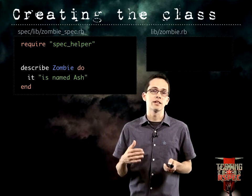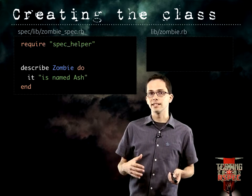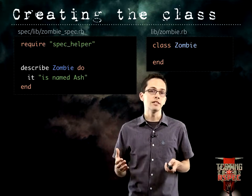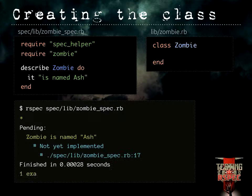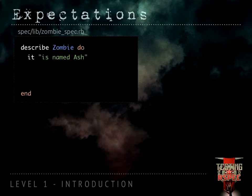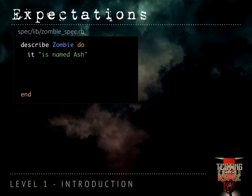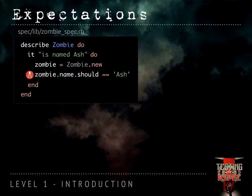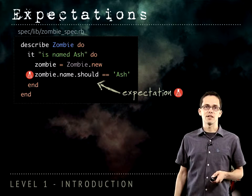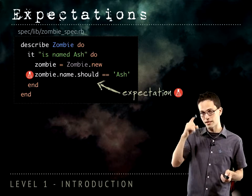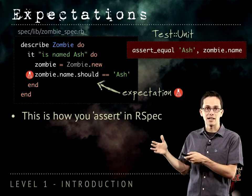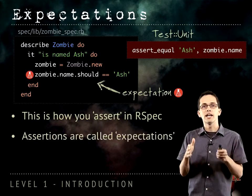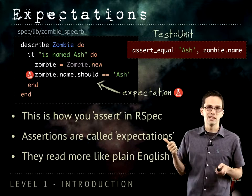Inside our lib directory, we're creating zombie.rb and all we're going to do inside there is declare our class. Back inside of our specification, we require that class. Now let's write out the rest of the example: first creating a new zombie, then writing zombie.name.should == 'Ash' — and we call that an expectation. Whereas with assert you might write assert_equal 'Ash', zombie.name, with RSpec we write zombie.name.should == 'Ash'. We call that an expectation, and as you can see it reads a lot better.